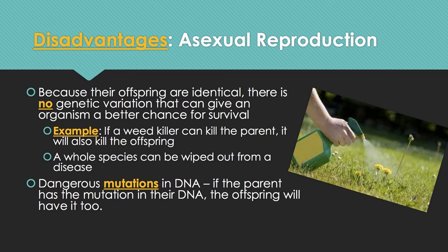The disadvantages of asexual reproduction are that offspring are identical, so there's no genetic variation to give a better chance for survival. For example, if a weed killer can kill a parent plant, it will also kill all the offspring. A whole species can be wiped out by a single disease. Hand sanitizer kills 99.9% of bacteria, but nothing could kill 99.9% of people because people are too genetically varied. Also, dangerous mutations in DNA will be passed to all offspring.